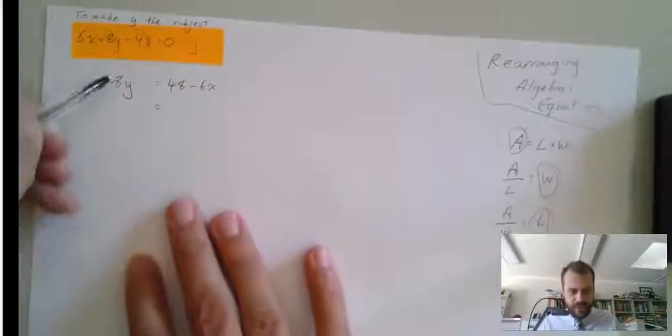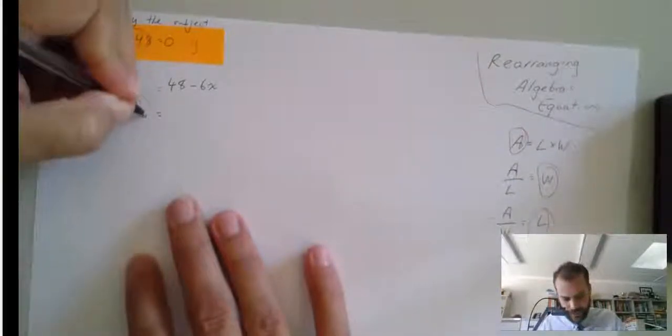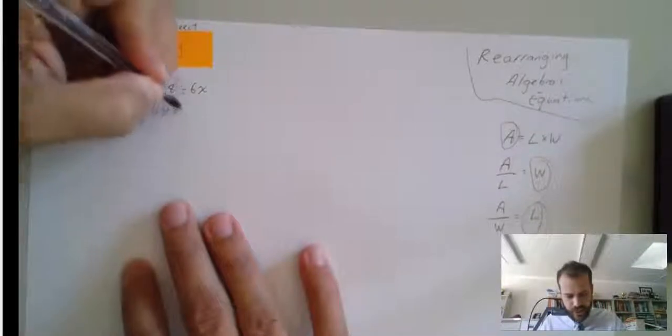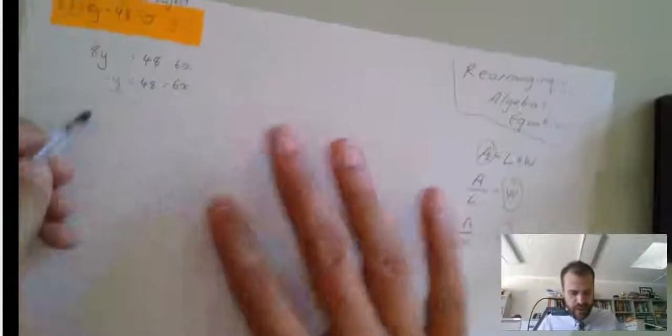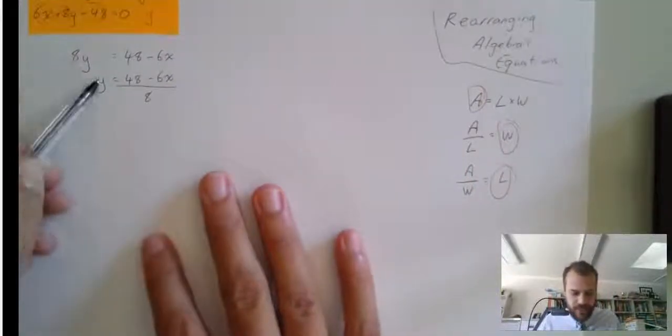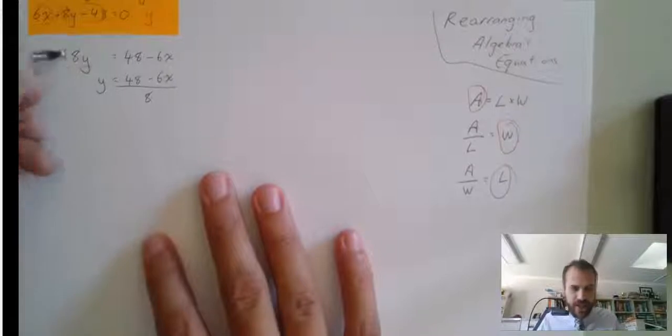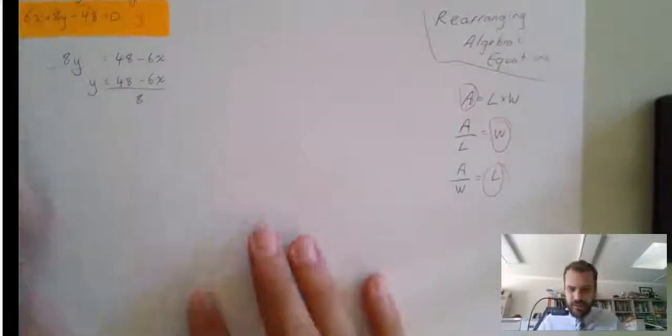Now, the thing that's stopping me is this 8, and this is 8 times y. So, that's y equals 48 minus 6x, and then divide by 8. What I really did was divide both sides by 8. It's just that when I divide by 8, the 8 cancels out on the left-hand side.